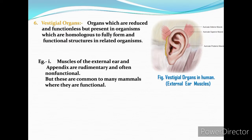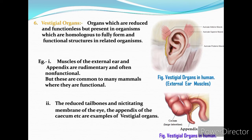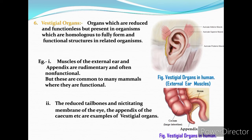The study of vestigial organs offers an evolutionary explanation by stating that adaptations to new environments have made these structures redundant. Such structures are called vestigial organs. For example, muscles of the external ear and the appendix are rudimentary and often non-functional, but common to many mammals. Other examples include rudimentary tail bones and the nictitating membrane of the eye, and the appendix of the cecum.